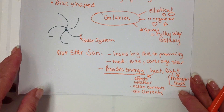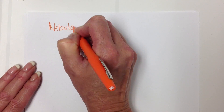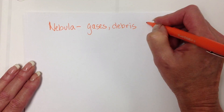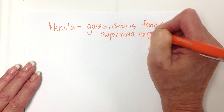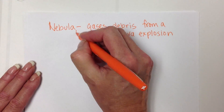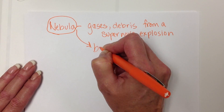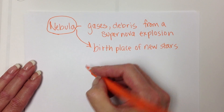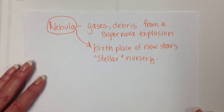Let's look at some other objects contained in the universe. First, let's look at what we call a nebula. A nebula is actually just a bunch of gases and debris from a supernova explosion — from the death of a large star. What's cool about the nebula is it gives rise to new stars, so it's the birthplace of new stars. We also call it a stellar nursery.